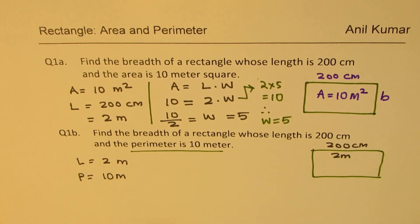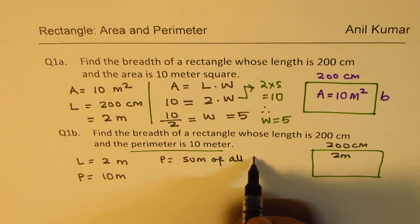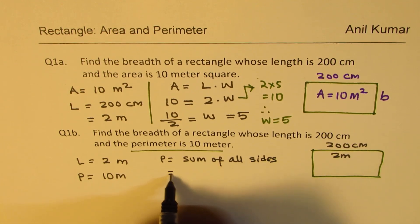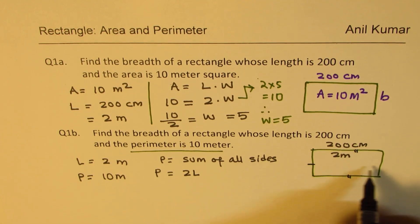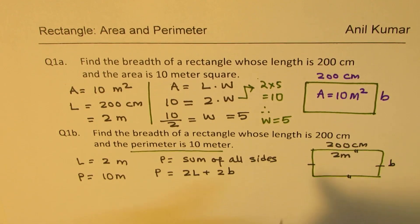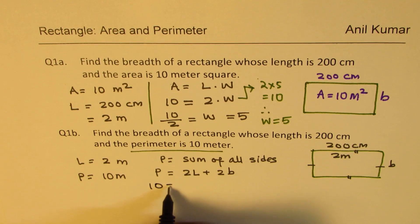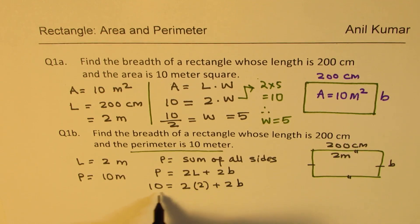Now what is perimeter? Perimeter is the sum of all sides. In our case, perimeter will be 2 times length, since these two lengths will be the same, and we have to add 2 times breadth B. Adding them we get our perimeter. We are given perimeter is 10, so we'll write 10 equals 2 times 2 plus 2 times breadth. That makes it 10 equals 4 plus 2 times breadth.